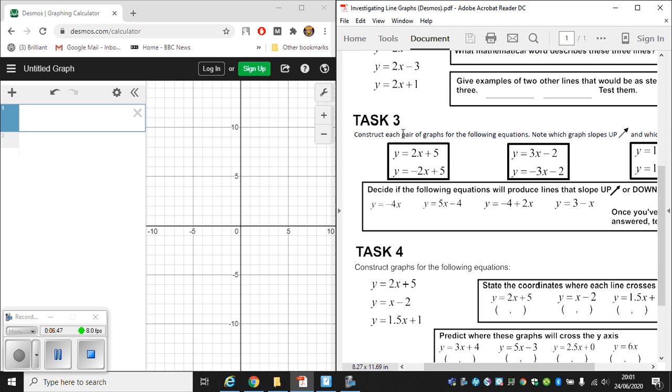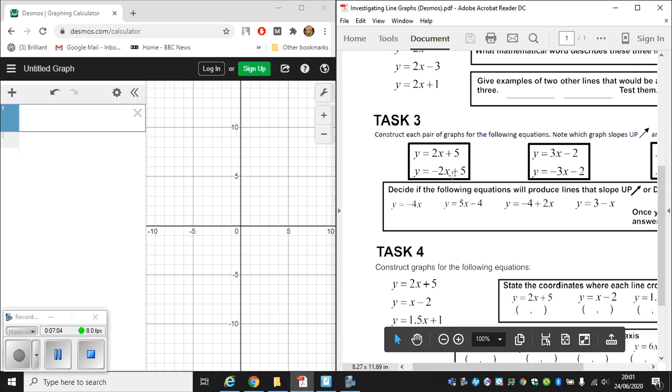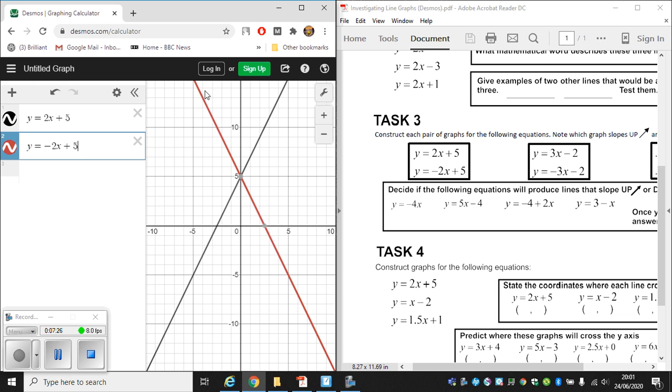Task number three requires us to construct pairs of graphs at a time. So we have a pair of graphs here. So we need to plot both of those using Desmos. And then it says note which graph slopes up and which graph slopes down. Let's have a look at this first example so we see what this means. I'm going to draw this first graph in Desmos. Y equals 2x plus 5. Y equals 2x plus 5. So I've got my first graph here. And then I need the second graph as part of the pair, which is y equals minus 2x plus 5. So notice how they kind of crisscross over one another.